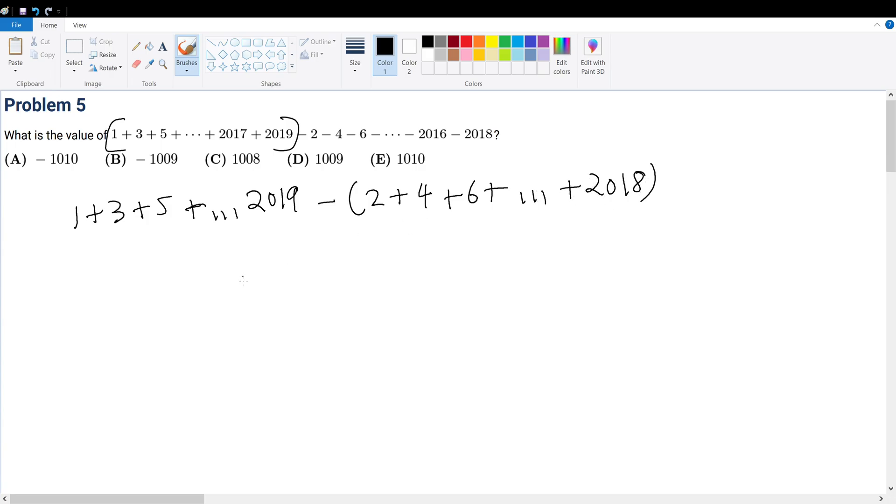Let's find the sum of each separately. What is the general term for this series? a sub n in the arithmetic series is a sub 1 plus n minus 1 times d. The first term here is 1 plus n minus 1, the common difference is 2, so that's equal to 2n minus 1.